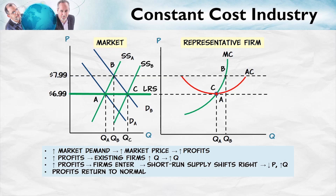Where does our assumption of constant industry cost come in? It comes in right here: when the industry expands with new entry, that isn't driving up the representative firm's costs. The reason is that this industry is small relative to its input markets. So when this industry expands, it doesn't drive up the price of its inputs. That means the average cost curve isn't changing as the industry expands or contracts. Because the cost curve for the representative firm isn't changing, the only equilibrium with zero economic profit is at the minimum point — when price equals average cost. Price is always driven down in the long run to the minimum of the average cost curve. So points A and C are along a long-run industry supply curve, which is flat.